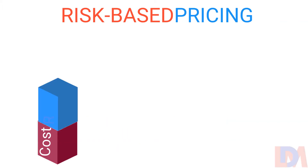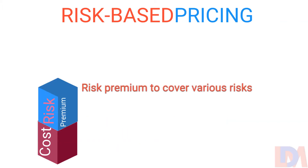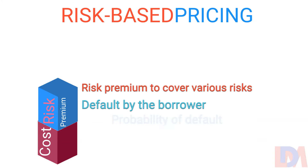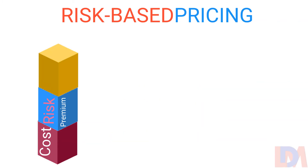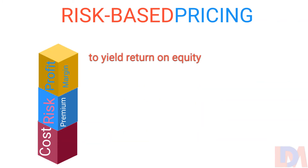The risk premium takes the form of default by the borrower. The premium for default is determined by the probability of default and the loss given default. Profit margin is added to yield return on equity and taxes on profit earned.